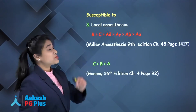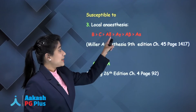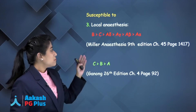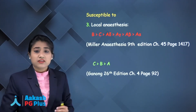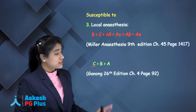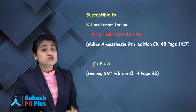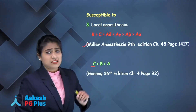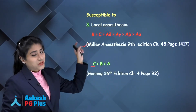For susceptibility to local anesthesia, according to Miller's: B > C > A-delta > A-gamma > A-beta > A-alpha. Miller says B fibers are most susceptible. Ganon says C is most susceptible, but whenever you get such a question, go with Miller's — so the answer is B, not C.